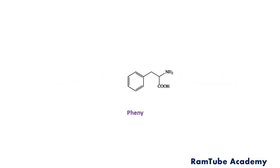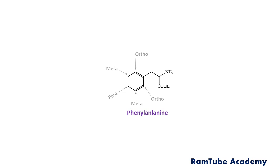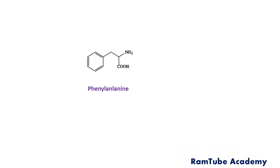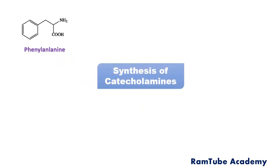This is phenylalanine, one example of an amino acid. The two positions adjacent to the substituent on the benzene ring are the ortho positions, the next ones are the meta positions, and the one opposite to the substituent is the para position. It is important to remember this while writing the synthesis of catecholamines.